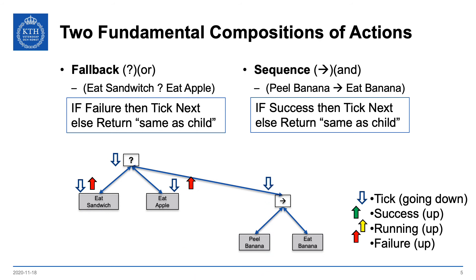Then the fallback ticks its next child, which is a sequence node. The sequence ticks its first child, peel banana. Imagine peel banana succeeded — then the sequence, on success, ticks the next child and goes on to tick eat banana. And if eat banana returns running, then running goes all the way up and the agent eats the banana. So that's how a behavior tree executes, and that's how the ancestors of an action decide what to do next.